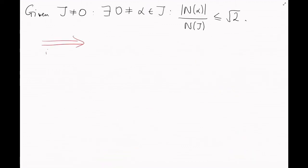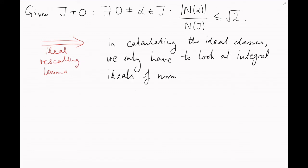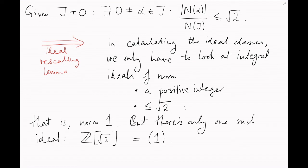Just like a couple of videos ago, in calculating the ideal classes, we only have to look at integral ideals with norm some positive integer less than root 2. In other words, with norm 1. But there's only one ideal of norm 1. That's the whole ring itself. The principal ideal generated by 1. So, every ideal is principal. And we conclude that Z adjoin root 2 has unique factorization.